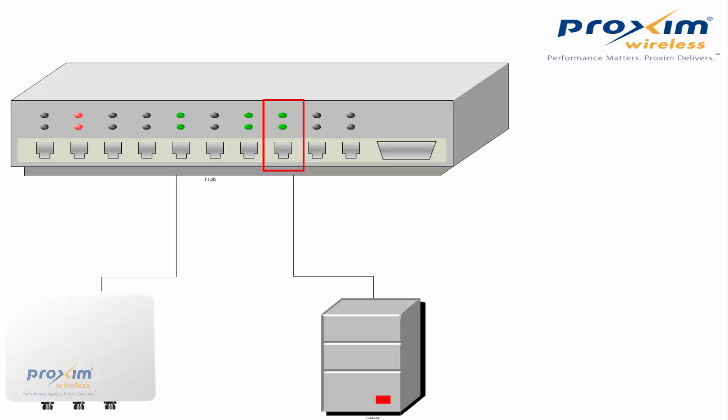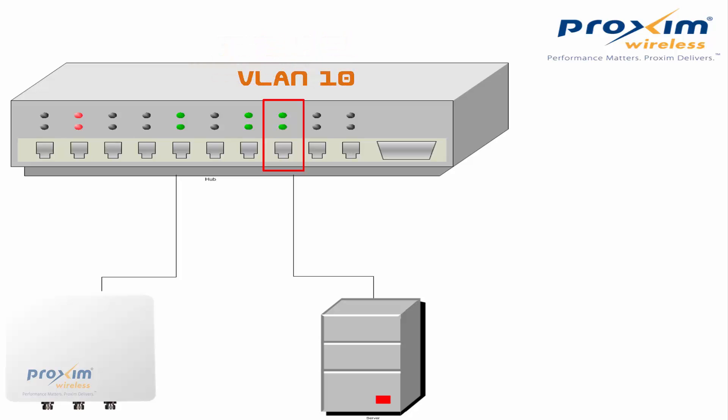If the PC is VLAN unaware — meaning the switch port does not understand VLANs — you're going to set it to untagged or access mode, but make it part of VLAN 10. All traffic going through that switch port will still be tagged as it travels to the radio. As traffic moves back into the switch port, the radio will retag it with VLAN 10. So both ports have to be set up for VLAN 10 — either trunked if VLAN-aware, or untagged/access if not.